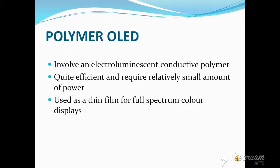Another type of OLED is polymer OLED, made by polymer molecules. It involves an electroluminescent conductive polymer. It is quite efficient and requires a relatively small amount of power. It is used as a thin film for full-spectrum color displays.